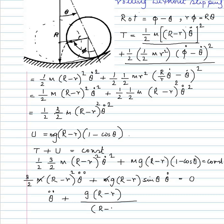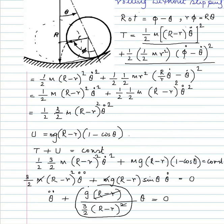This gives theta-double-dot plus [g (R minus r) divided by (3/2)(R minus r) squared] times sin theta equals zero. For small theta, sin theta approximates theta, so theta-double-dot plus [g divided by (3/2)(R minus r)] times theta equals zero. Therefore omega-n squared equals 2g divided by 3(R minus r), giving you the natural frequency of this system.